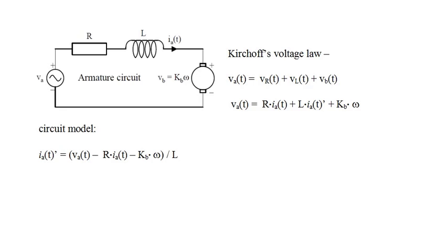From Kirchhoff's voltage rule, the input voltage V_A equals the sum of the resistor, inductor, and back voltages. The resistor voltage V_R equals R times I_A. The inductor voltage V_L equals L times I_A prime. The back voltage V_B equals K_B times omega. Solving for I_A prime, we have a circuit model for the inductor, as shown, with the proviso that the right-hand side contains the rotor spin rate omega, and we don't have an equation for omega yet.